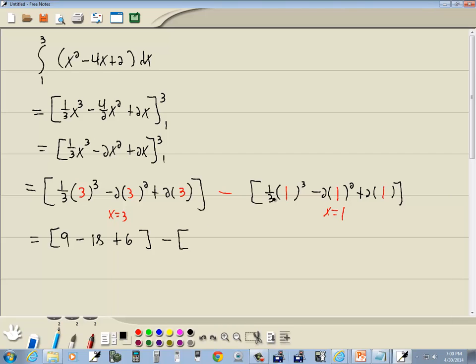Minus 1³ is 1, so it drops away. We've got 1/3, 1² is 1, so it drops away, so we've got minus 2 plus 2.